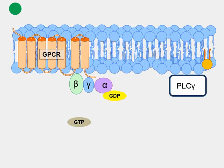Another important second messenger activated by a G-protein coupled receptor is phospholipase C-gamma, or PLC-gamma. Just like adenylate cyclase, phospholipase C-gamma plays a critical role in activating many different pathways within the cell. It is activated by a number of signals, including G-protein coupled receptors. So let's see how this works and what phospholipase C-gamma does.